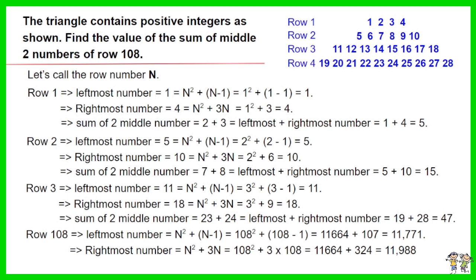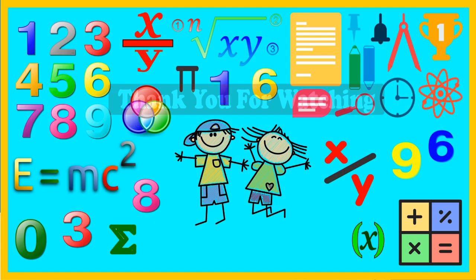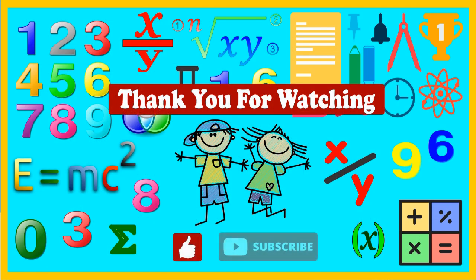The sum of the two middle numbers of row 108 equals 11,771 plus 11,988. The answer is 23,759.